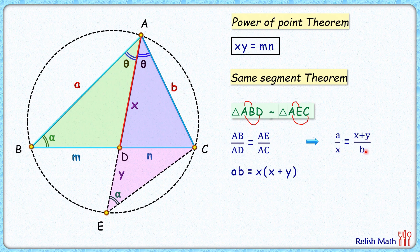Cross multiplying, we get ab equals x times (x plus y). Opening the bracket on the RHS, we get ab equals x squared plus xy.